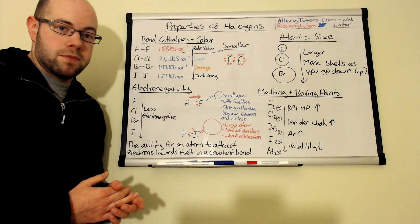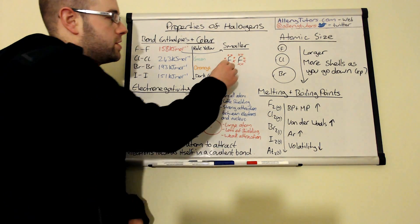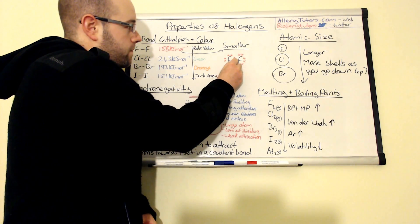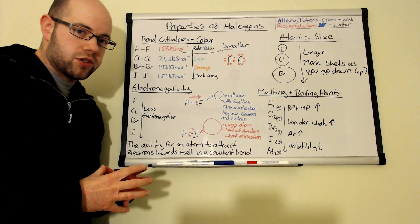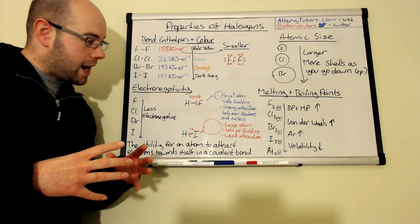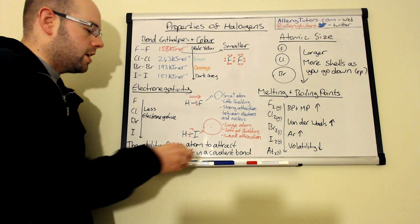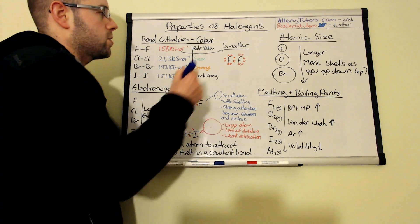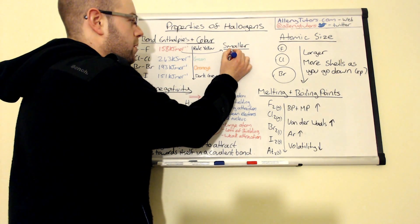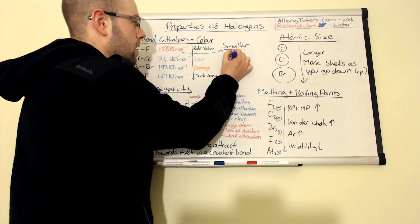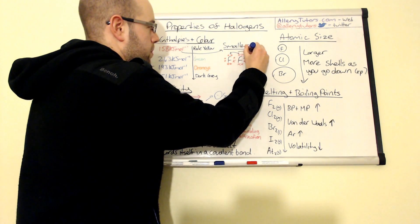And you can see here I've drawn the dot cross diagram to show what that's actually happening. So you can see here we've got the shared pair of electrons very little shielding so it should be quite strong but actually the atoms get that close to each other that you start and get some repulsion between the non-bonding pair of electrons. So I'll put that there and we actually have some repulsion.